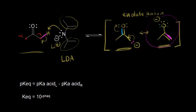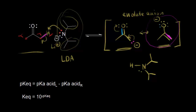If we form our enolate anion, we're also going to get another product. If we think about adding a proton onto our base, we're going to form an amine. The electrons over here in red pick up this proton, forming this bond, and we'd form an amine.